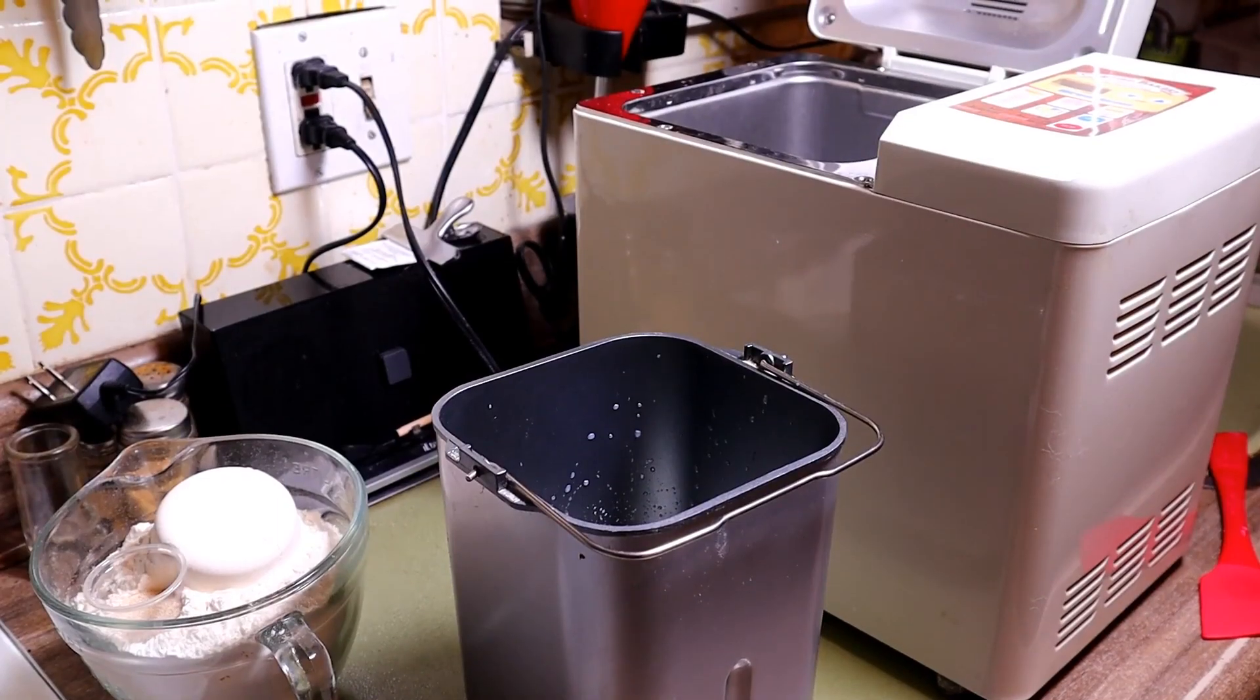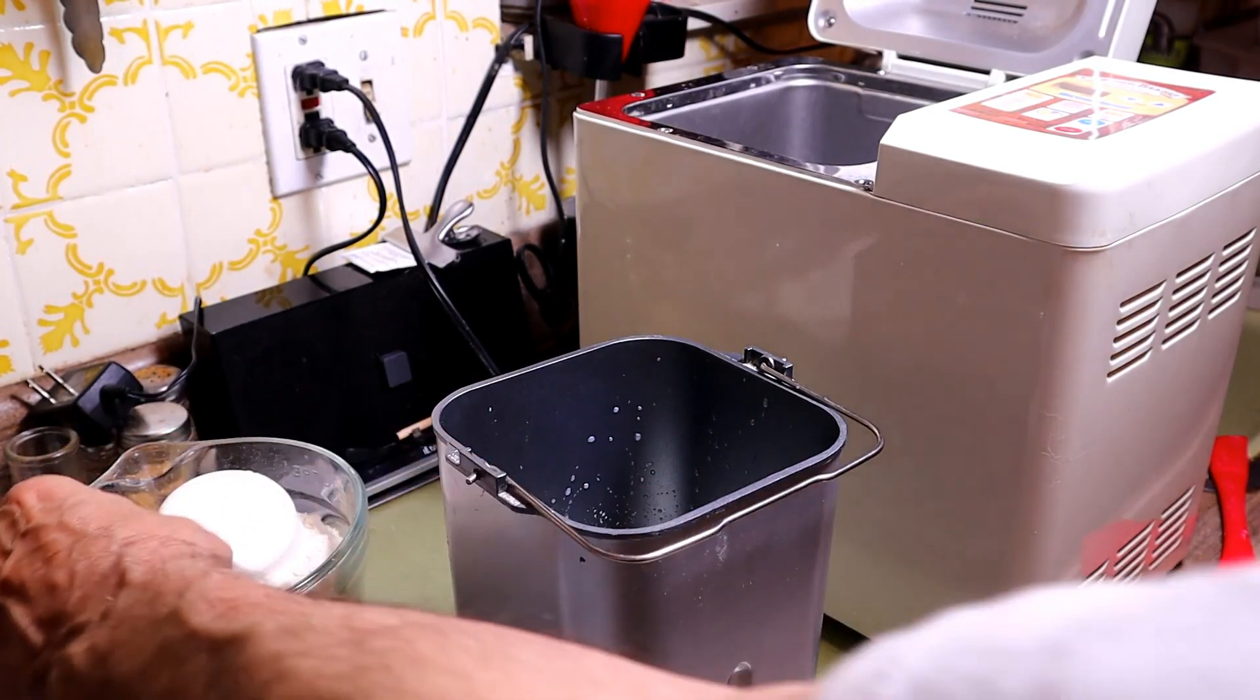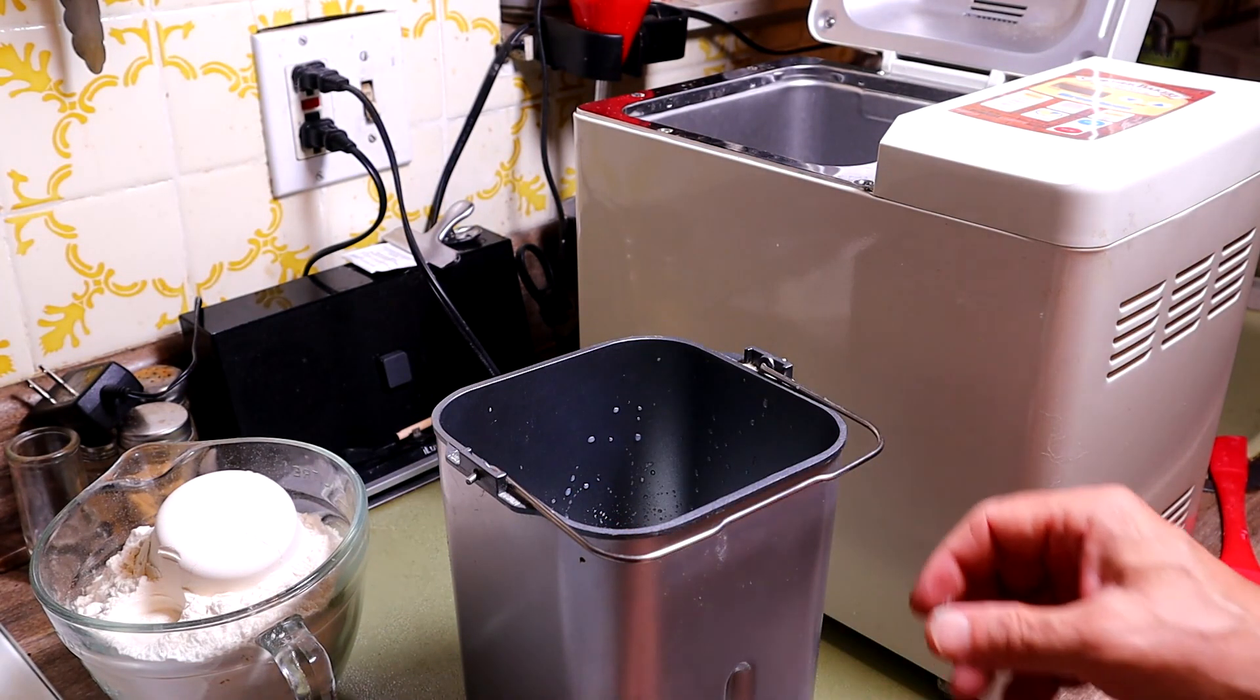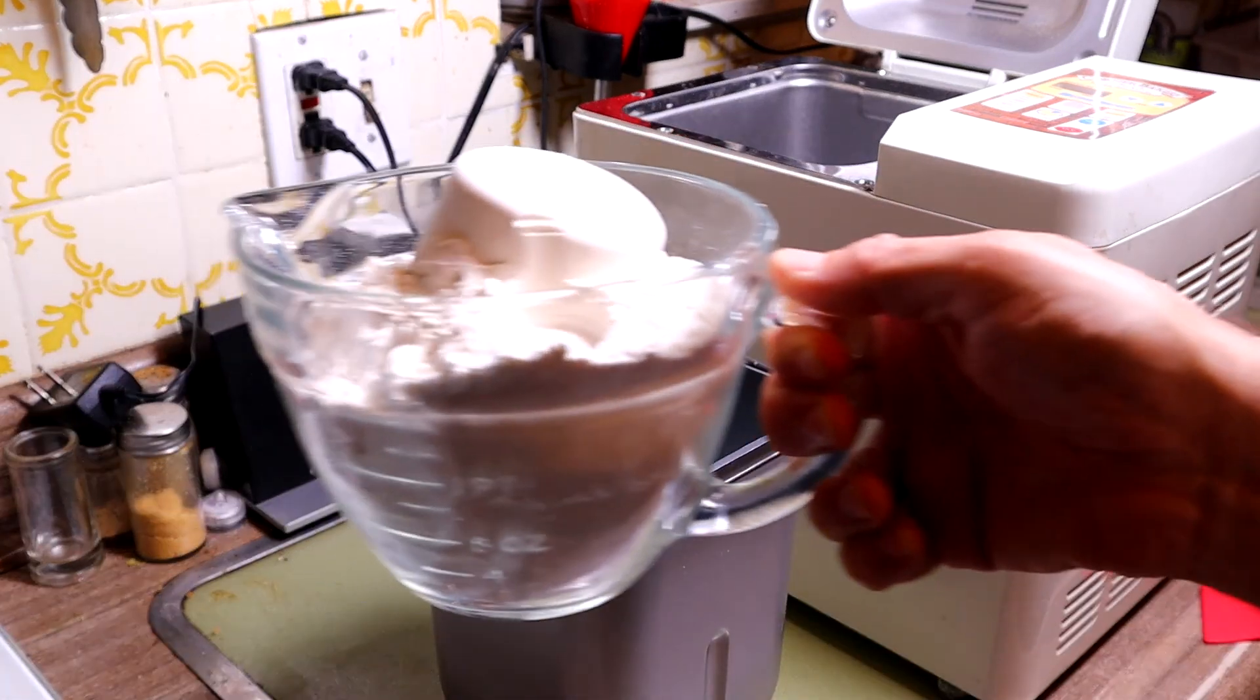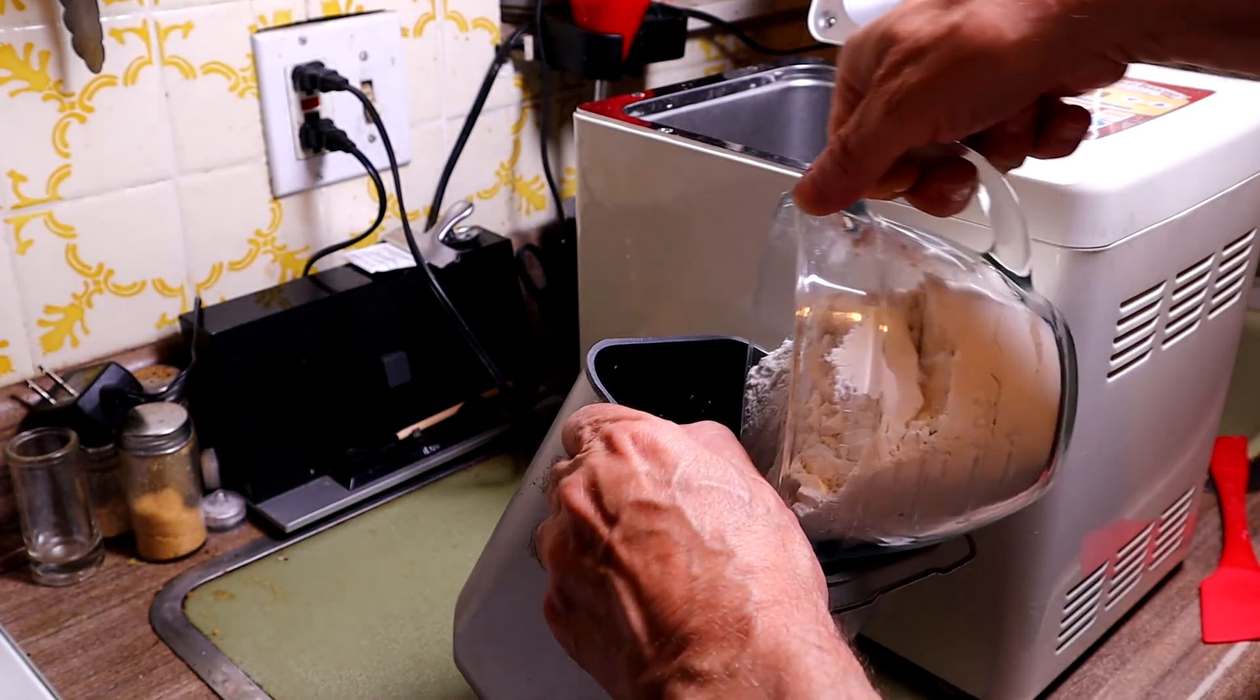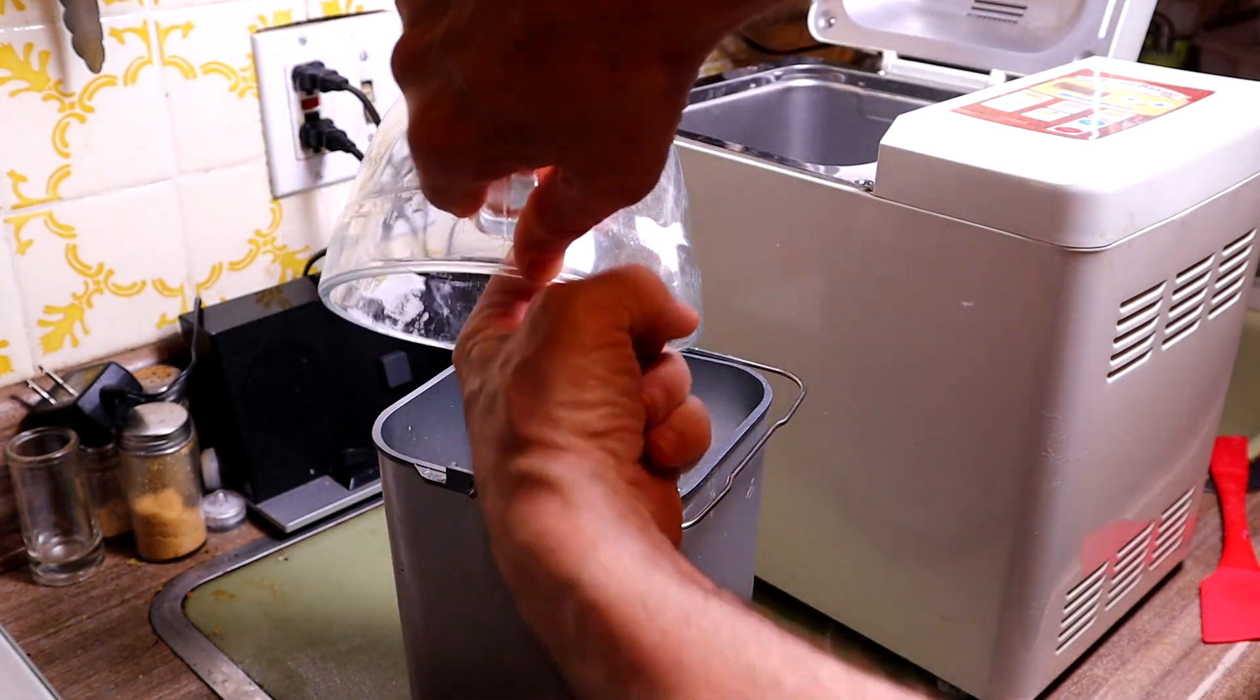All right, we're down to our last two ingredients here. Two teaspoons of yeast. We add that last. We have four cups. I've pre-measured out the flour. I'm using actually bread flour. First time in a long time I'm using bread flour. Usually I just use whatever I can grab my hands on. All right, so that's all pre-measured and put in there.